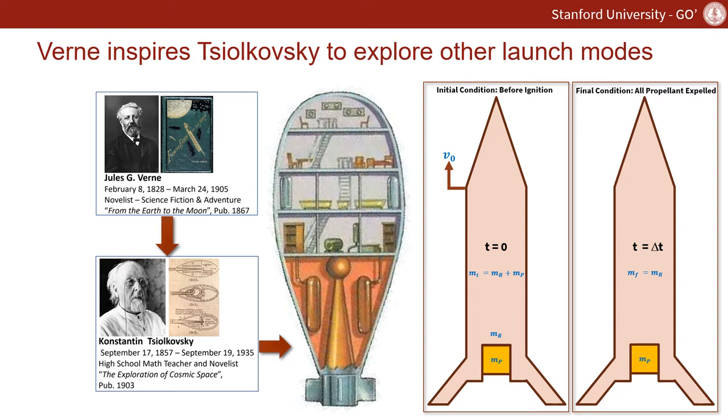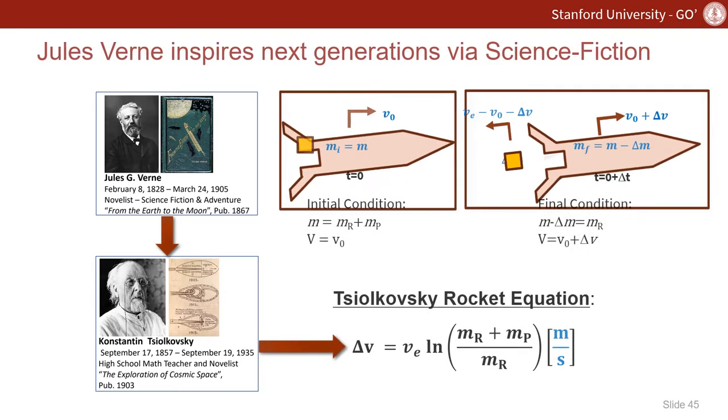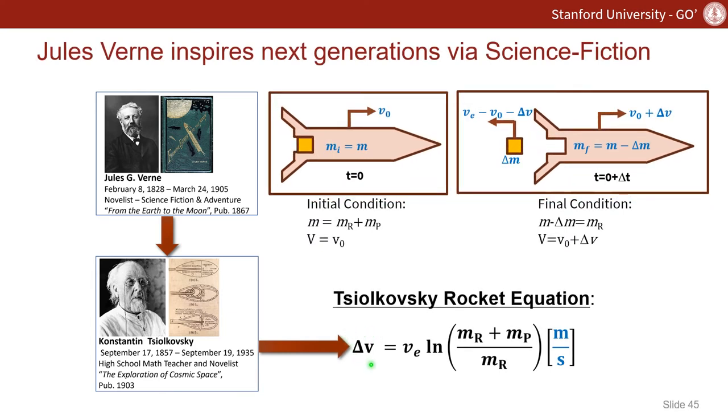The final condition would mean all propellant is expelled, and then we would end up with that initial velocity plus a delta V. Delta V can be expressed as Tsiolkovsky's rocket equation that describes the amount of propellant required to change the initial velocity of a fixed structural mass rocket.